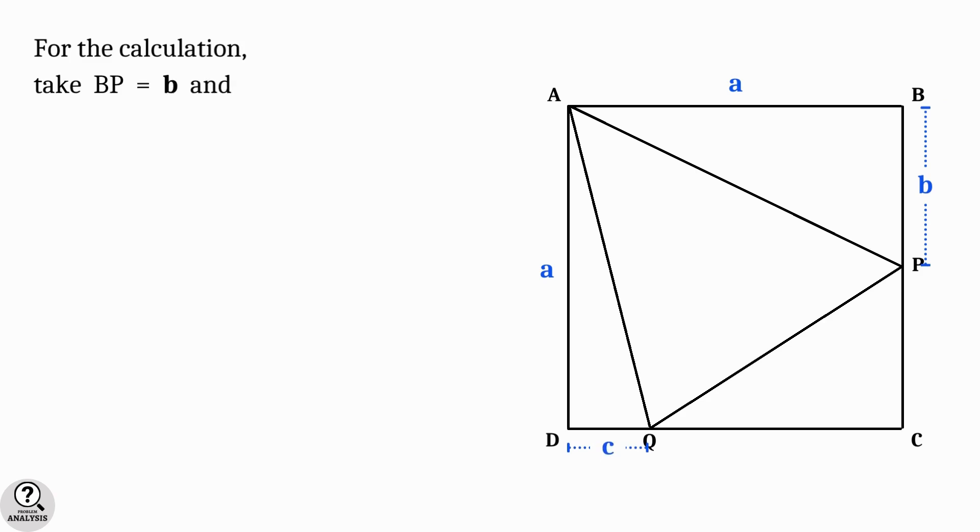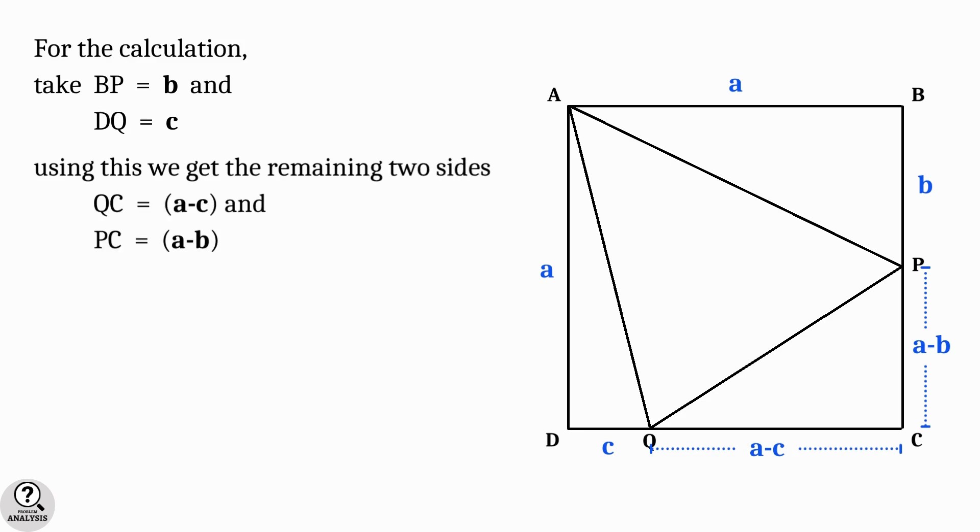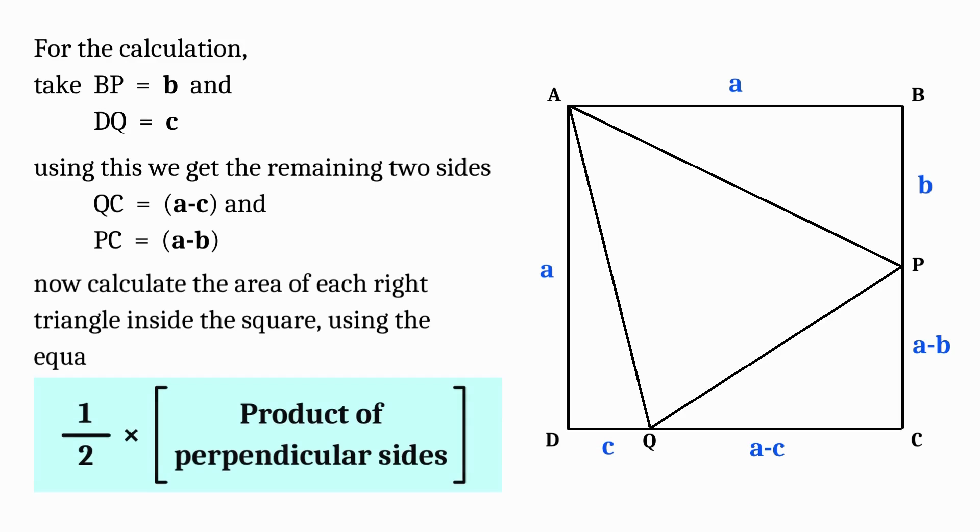Now for the calculation purpose, let's take BP equal to b units and DQ equal to c units, which implies QC equal to a minus c and PC equal to a minus b. Using all these data, let's calculate the area of each right triangle.